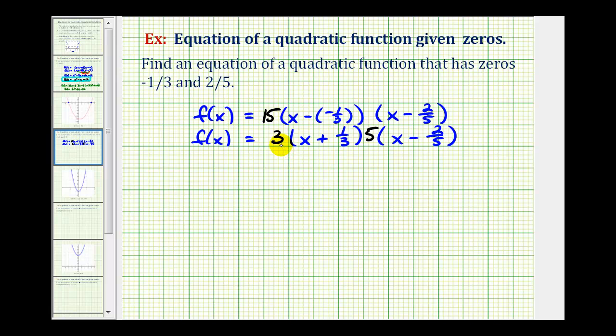So now we'll distribute the three here and here and the five here and here. So we'll have f(x) equals, this would be three x plus one. The second factor would be five x and then minus two.